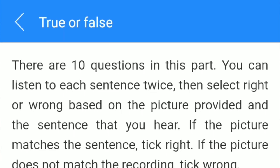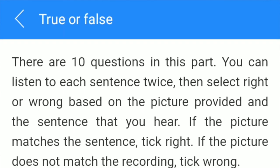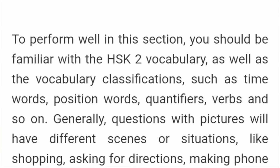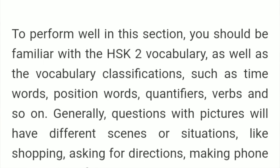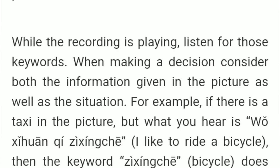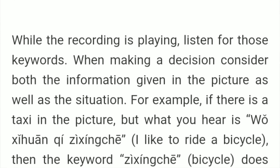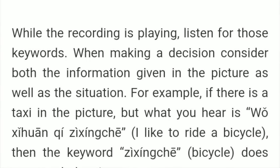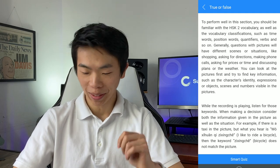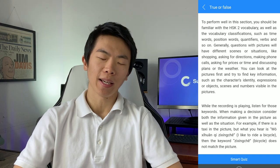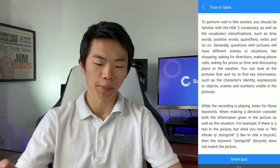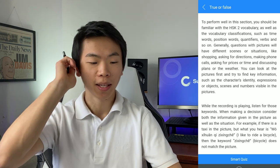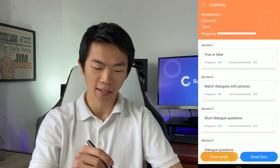There are 10 questions in this part. You can listen to each sentence twice and then select right or wrong based on the picture provided. To perform well in this section, you should be familiar with vocabulary as well as their classifications such as time words, position words, and quantifiers. While the recording is playing, listen for keywords. When making a decision, consider both the information given in the picture as well as the situation. Obviously they are giving you a lot of test-taking tips here, and if you're taking the HSK test, testing tips are very valuable.